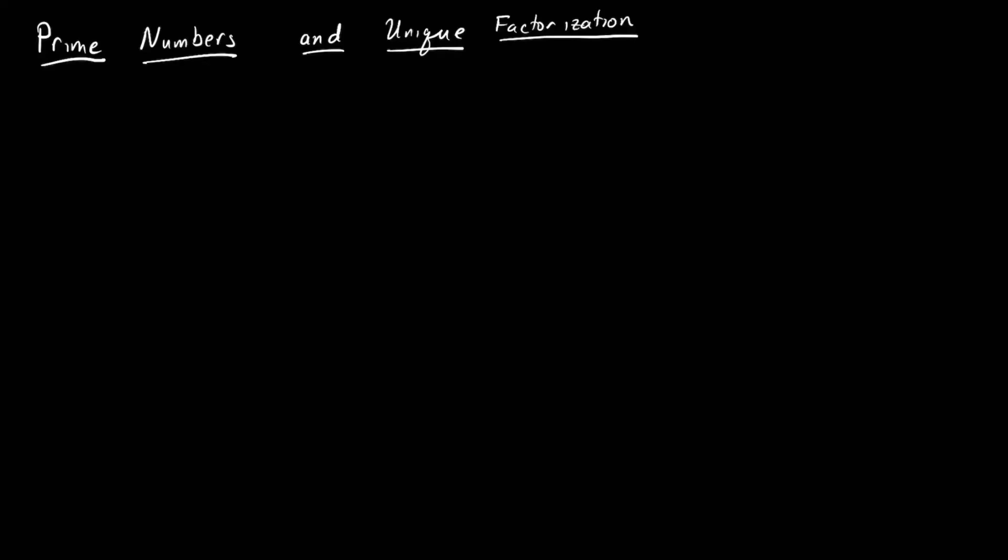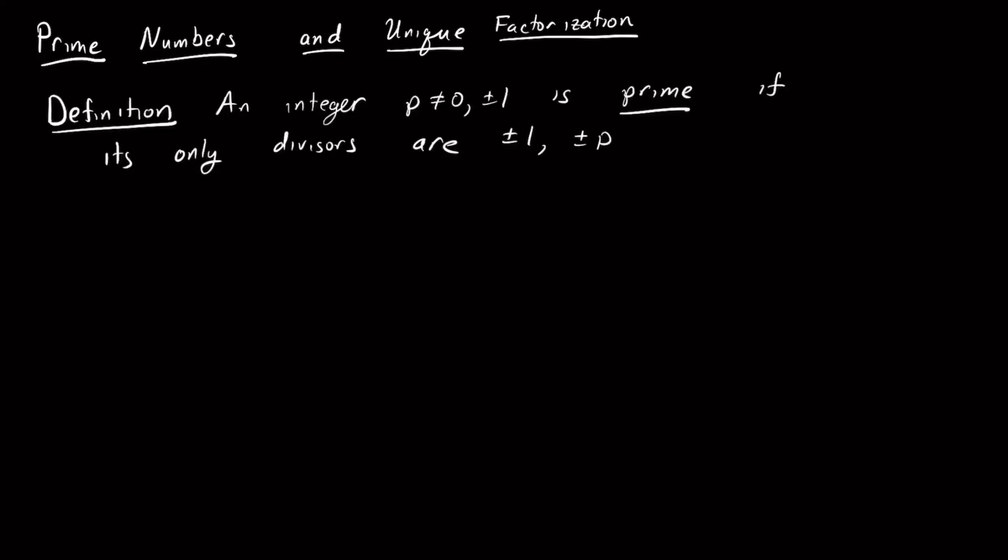The goal of this video is to talk about prime numbers and unique factorization — that any integer that's not 0 or ±1 can be factored uniquely into a product of primes. We'll begin with the standard definition: an integer p, not equal to 0 or ±1, is prime if its only divisors are ±1 and ±p.